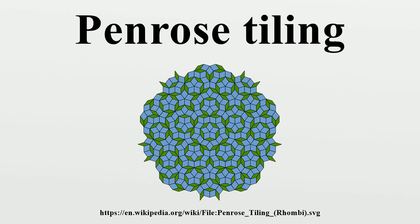Penrose's second tiling uses quadrilaterals called the kite and dart, which may be combined to make a rhombus. However, the matching rules prohibit such a combination. Both the kite and dart are composed of two triangles, called Robinson triangles, after 1975 notes by Robinson. The kite is a quadrilateral whose four interior angles are 72, 72, 72, and 144 degrees.